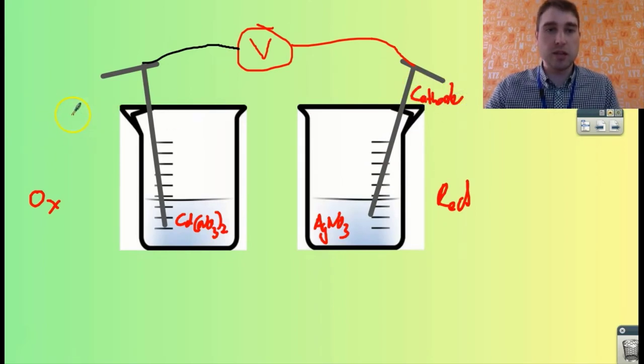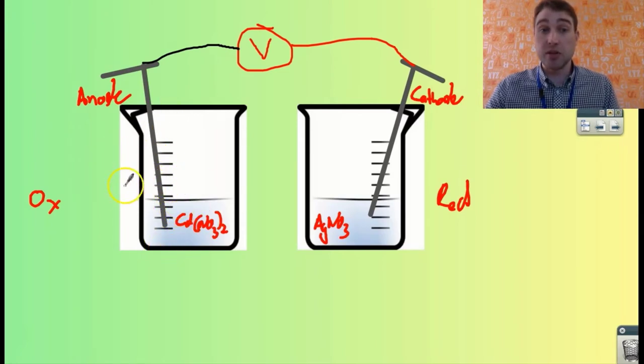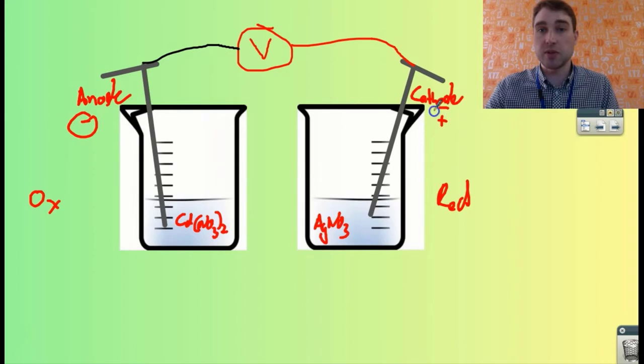Consequently, the cadmium is being oxidized, so that's our anode over here. We're going to get a buildup of electrons as the cadmium is oxidized. A buildup of electrons gives you a negative charge, so the anode is going to have a negative charge and the cathode is going to have a positive charge.